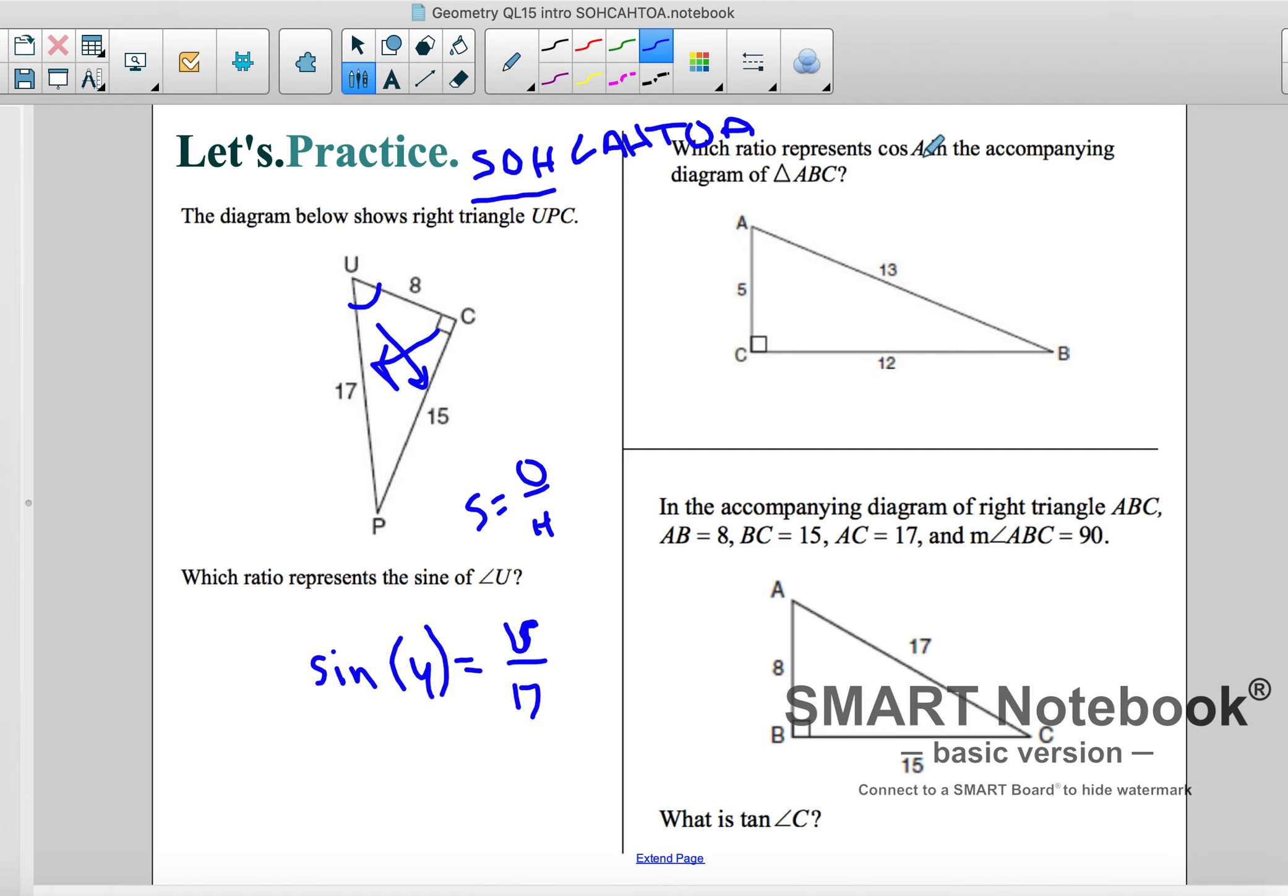Now let's take a look at the ratio, which represents cosine of A in this one. Well, A is here. It wants cosine. Cosine is adjacent over hypotenuse.